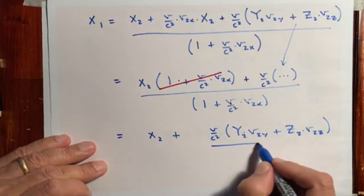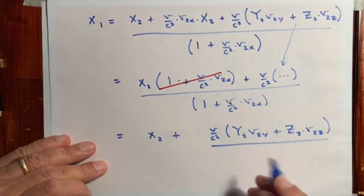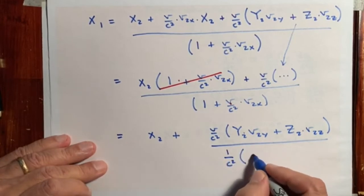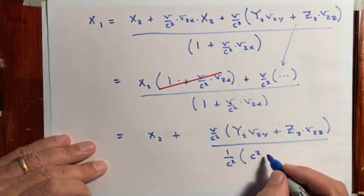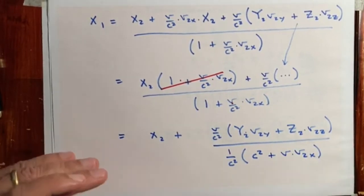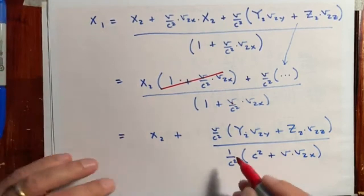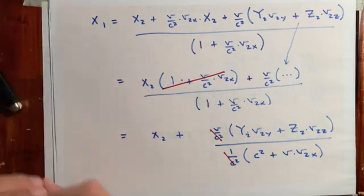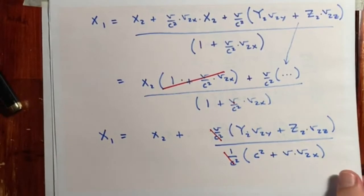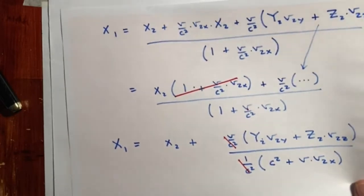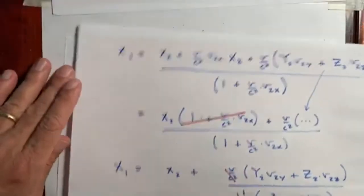We cancel the factor 1 plus V over c squared times v sub 2x from the numerator and denominator. Then factoring 1 over c squared from the denominator gives c squared in the numerator, allowing us to cancel the 1/c squared. The final expression for X sub 1 in terms of the second frame of reference is: X1 equals X2 plus V over c squared times the Y and Z terms, divided by 1 plus V times v sub 2x over c squared.